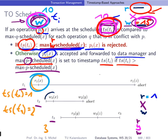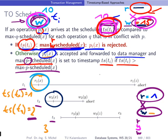Next, T2 wants to write to X. Since write conflicts with both read and write, we compare timestamp 2 to max R scheduled (which is 1) and max W scheduled (nothing stored). Timestamp 2 is not strictly smaller than 1, so there is no problem. The write operation is accepted and forwarded to the data manager. We update the write timestamp max W scheduled for X to 2.